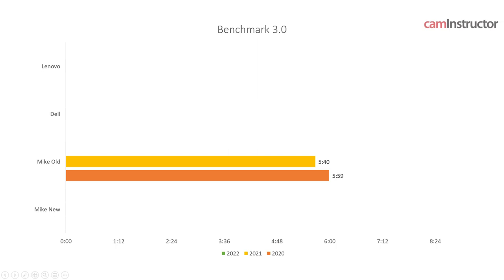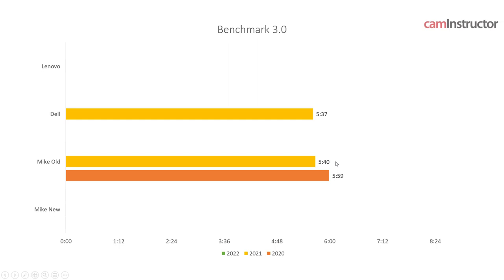Comparing my old computer to the Dell laptop — I only tested 2021 on the laptops — we're seeing a similar time between the laptop and my desktop. If you're looking for pure power, a desktop is the way to go. Desktops are far more efficient with heat management, and they're always plugged into the wall.